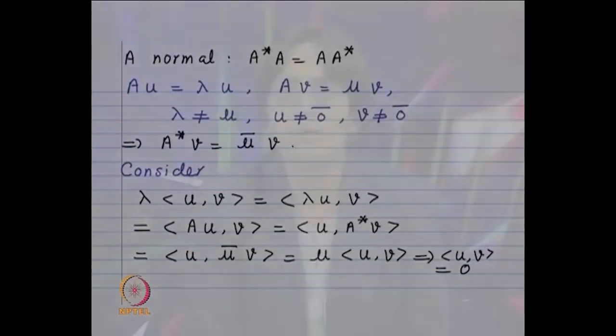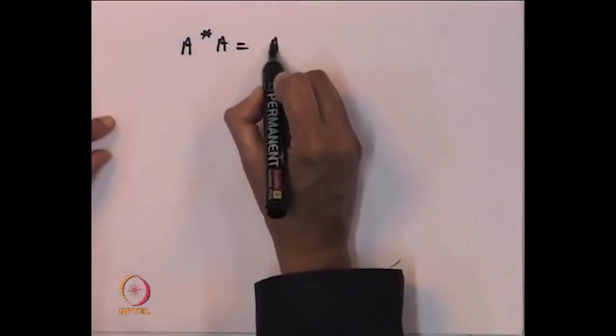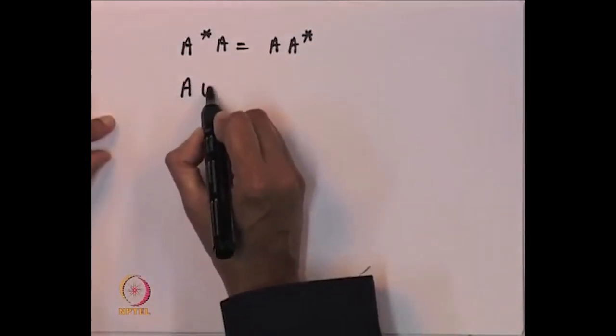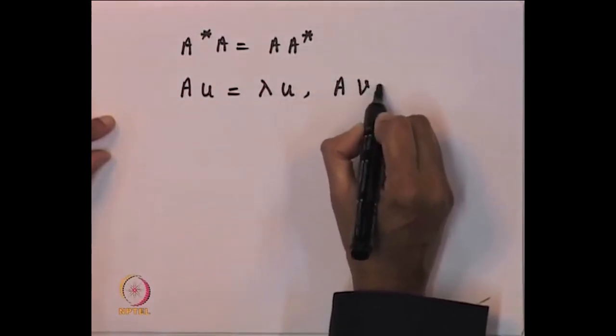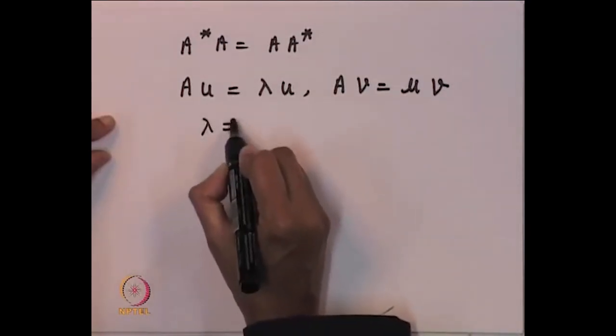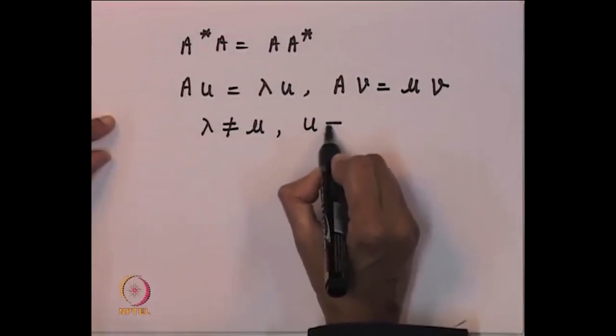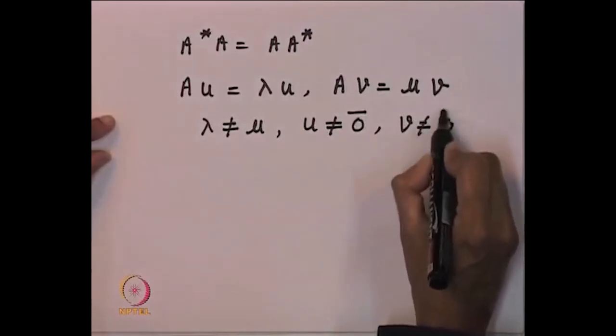Now we look at distinct eigenvalues for normal matrices. Let A*A equal AA*, Au equal lambda u, and Av equal mu times v, where lambda is not equal to mu, and u and v are associated eigenvectors with u and v both nonzero. We want to show that the inner product of u with v equals zero, i.e., u is perpendicular to v.